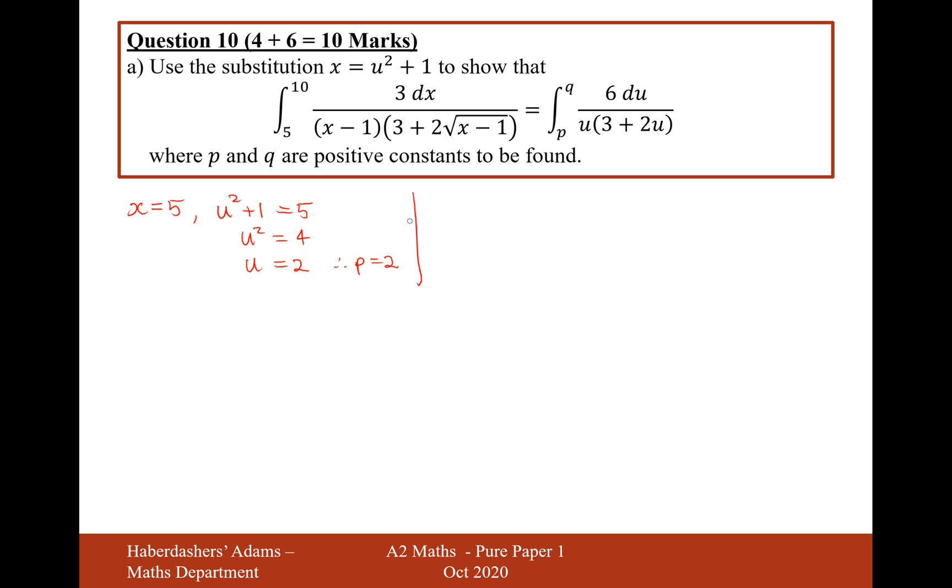And then on the upper boundary, x equals 10, so therefore we're going to set u squared plus 1 equal to 10. And then take away the 1 on both sides so it would be 9, and now u is equal to 3, so therefore q equals 3.